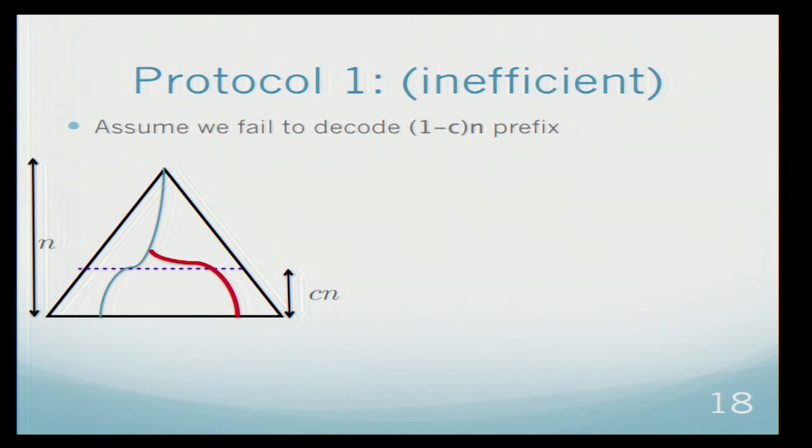Now I need to show you that we are actually capable of decoding at least 1 minus c fraction of the stream. Let's assume we don't. If we don't, it means that if that was the correct path, but we decoded something else, the divergent point from the correct path and the path that we decoded must be above this line of cn. This is 1 minus c and we decode something which is less than 1 minus c, so the divergent point is above this line.